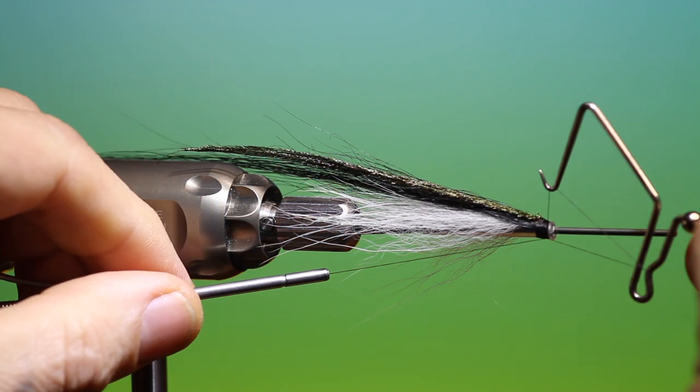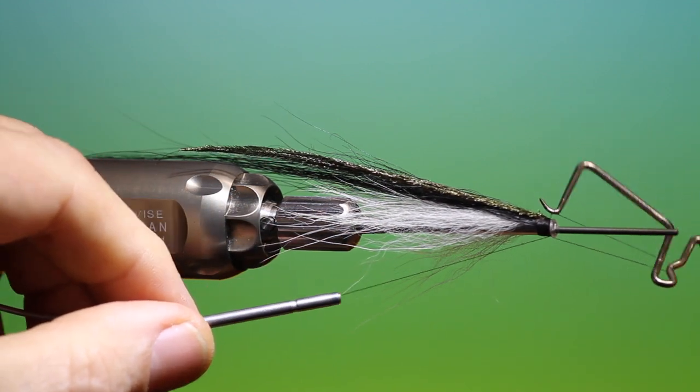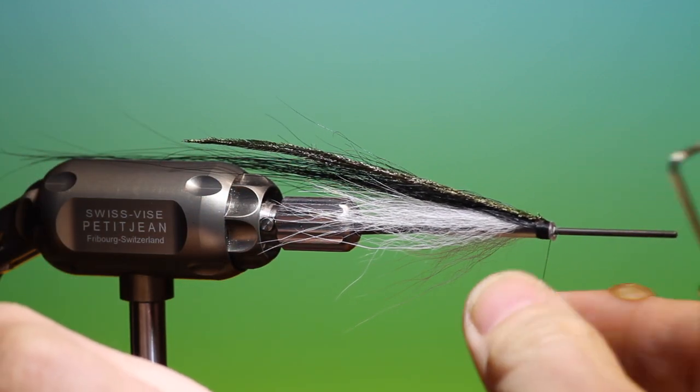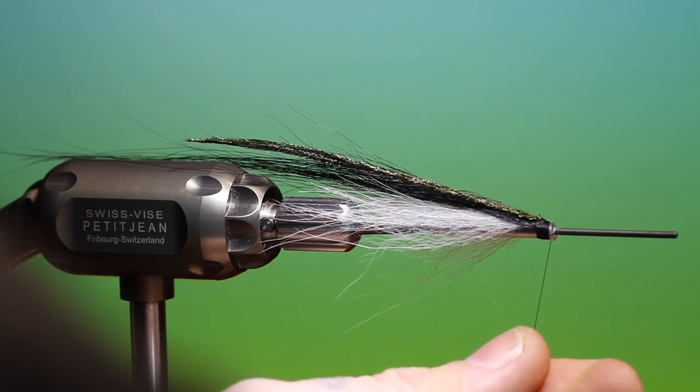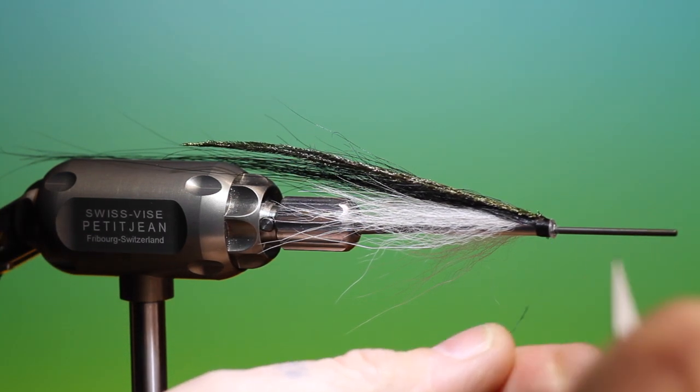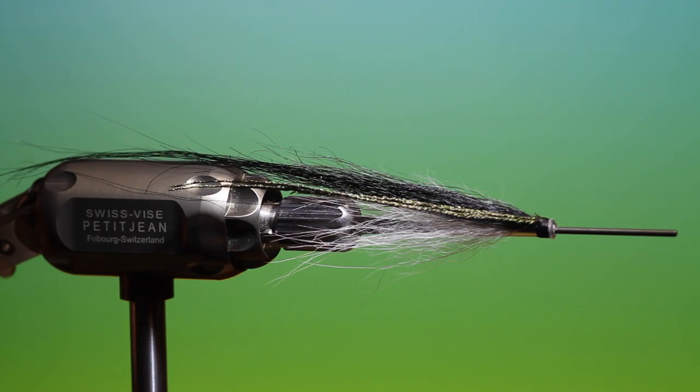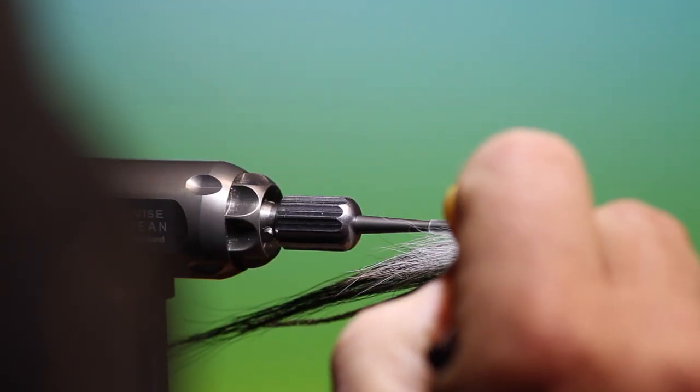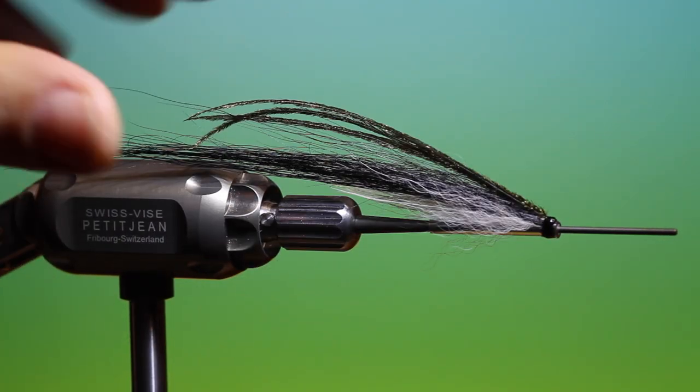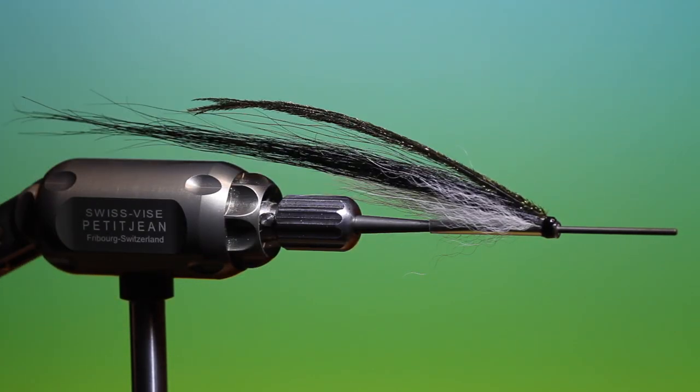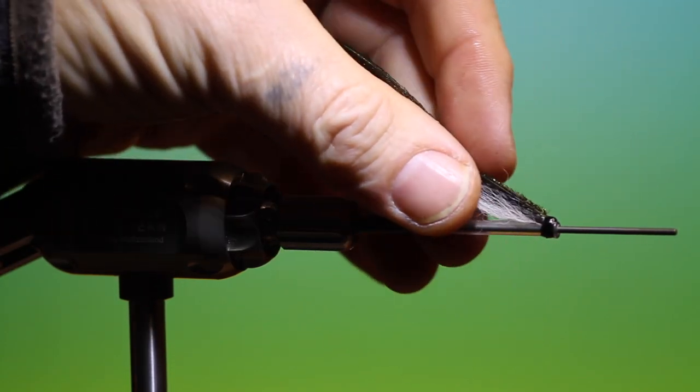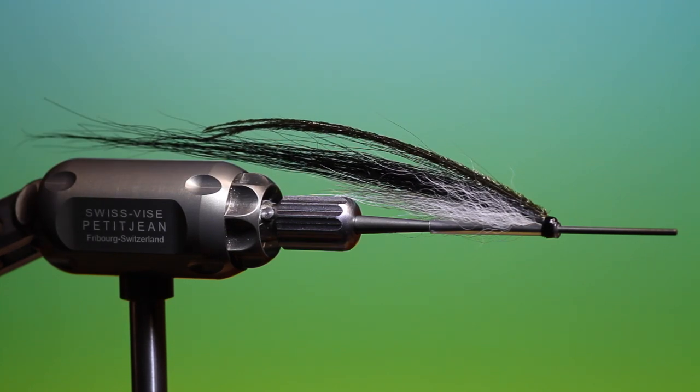Whip finisher. Remove the tying thread. And just give it a drop of varnish. And that is the finished Sunray Shadow. Great Atlantic salmon fly.